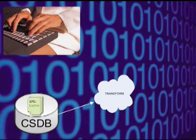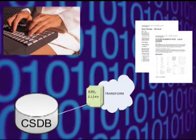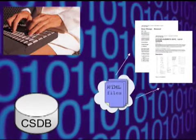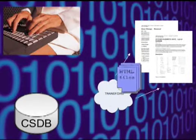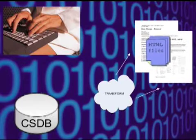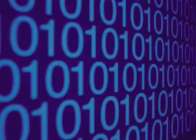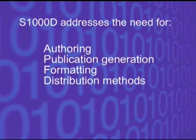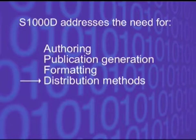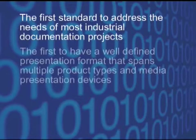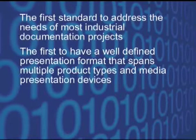S1000D also attempts to address the costs of creating and maintaining data for publications. It is not a hard and fast specification — it does have a degree of flexibility — but there are specific portions of the specification which must be followed exactly if a company wishes to take full advantage of its capabilities. S1000D addresses the primary need to define a publishing process with well-accepted authoring, publication generation, formatting, and distribution methods. It is the first standard to address the needs of most industrial documentation projects and the first to have a well-defined presentation format spanning multiple product types and media presentation devices.